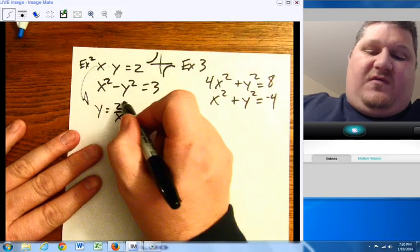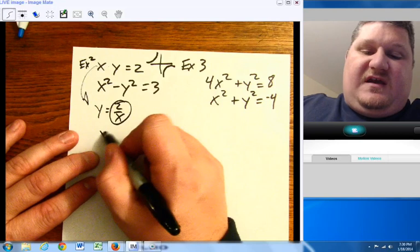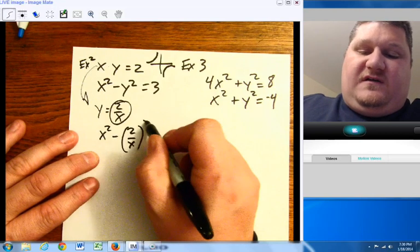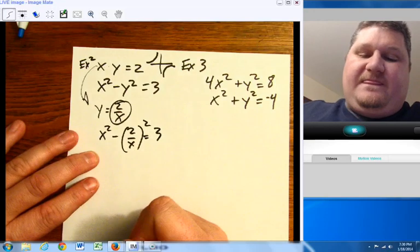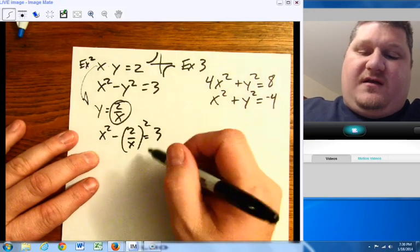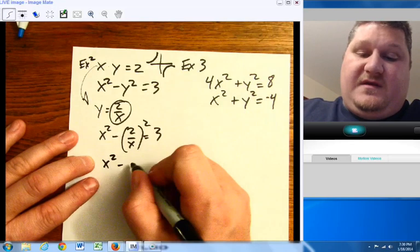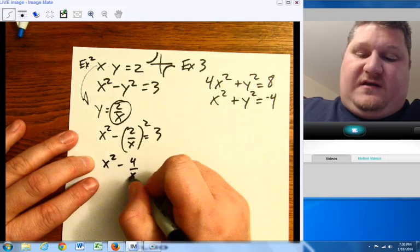In this case, again, your easiest bet would be to use a substitution here and say y equals two over x. And so, if y equals two over x, then I can say x squared minus two over x, the quantity squared, equals three. And if I multiply this out, I'm going to come up with x squared minus four over x squared equals three.